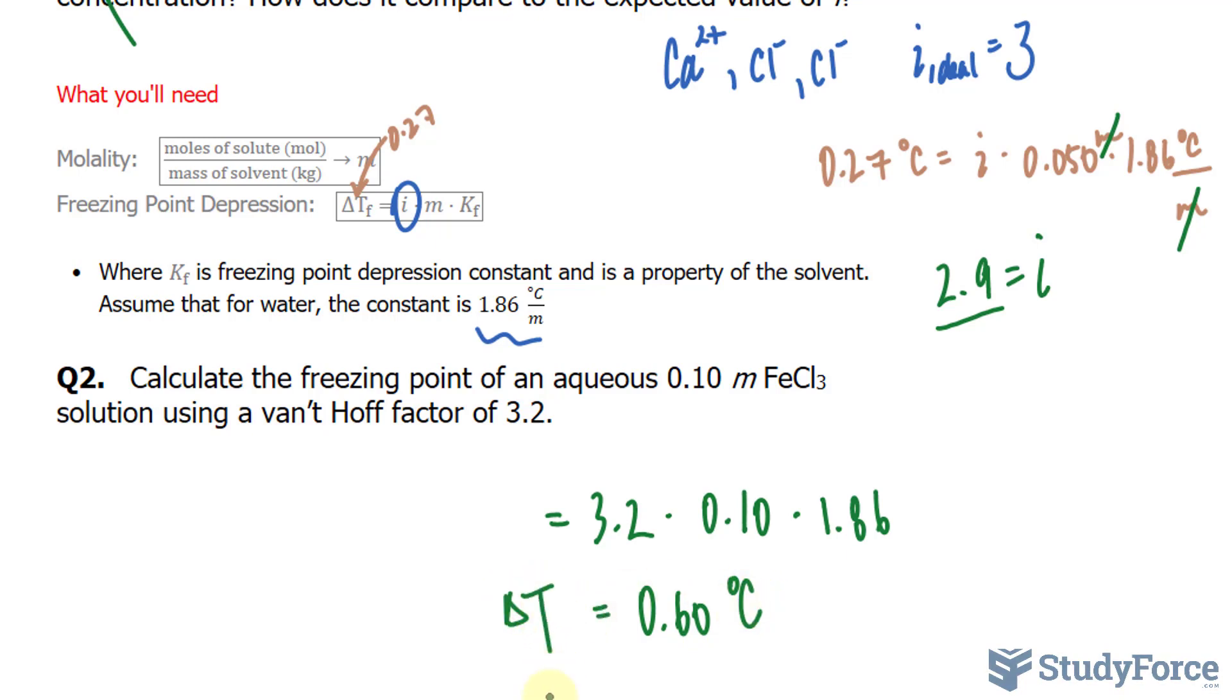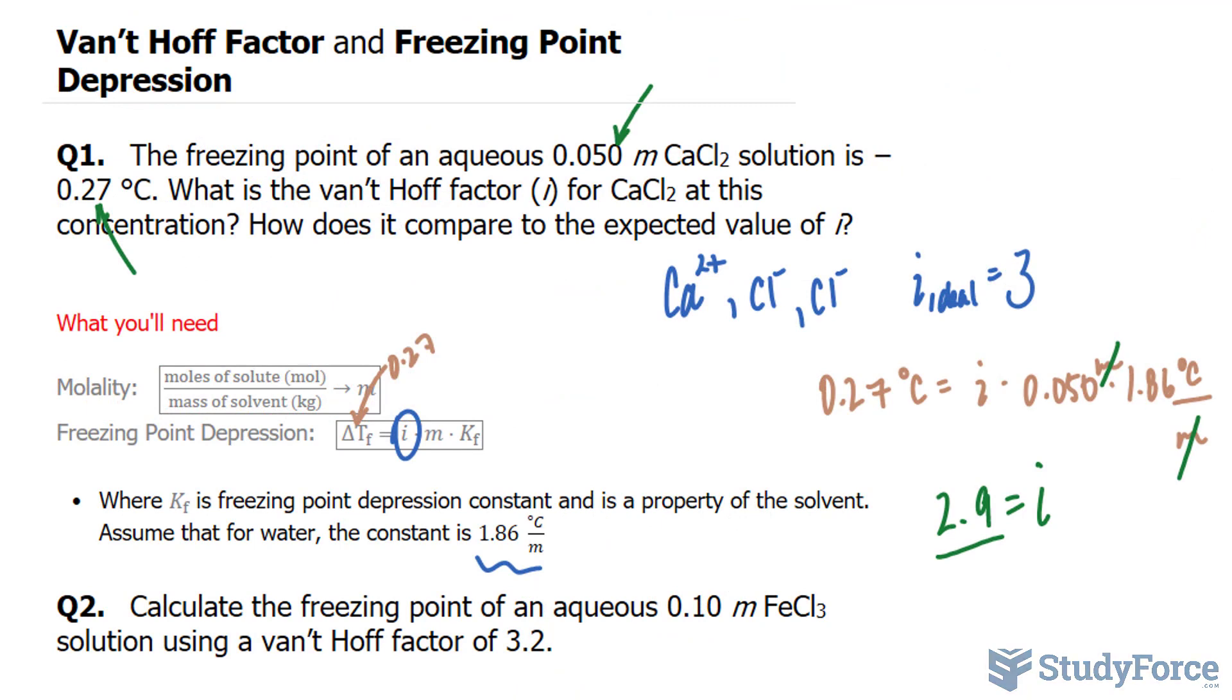That right there represents the change in temperature of the freezing point. So now, rather than the snow, for example, melting at 0 degrees Celsius, it will melt at negative 0.60 Celsius. And there you have it. That is how to calculate freezing point depression using the Van't Hoff factor.